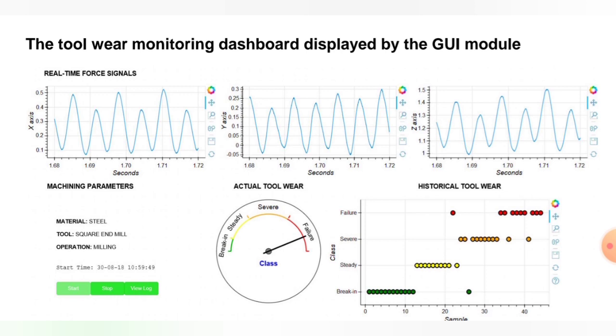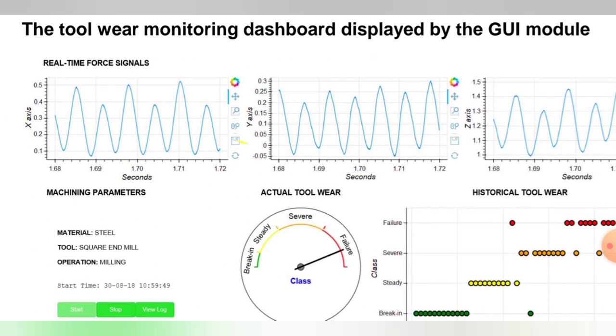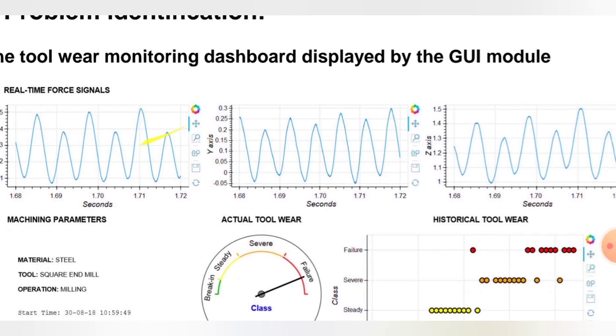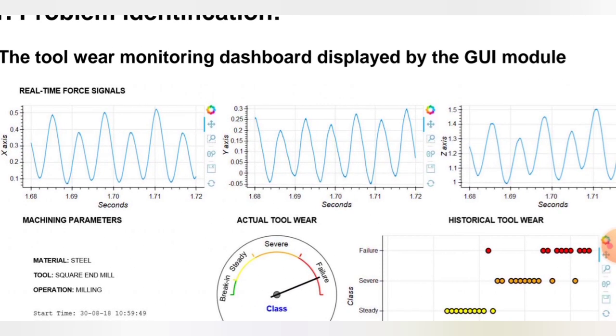Now here we can see the real-time force signals along the X-axis and Y-axis. These are the machining parameters which are set. Here you can see the sine wave of the machining parameters. The real-time force signals are given here.